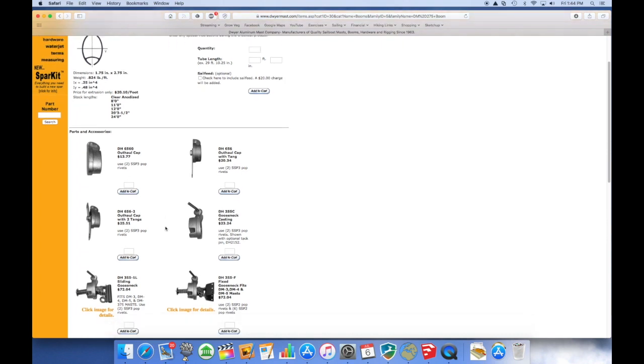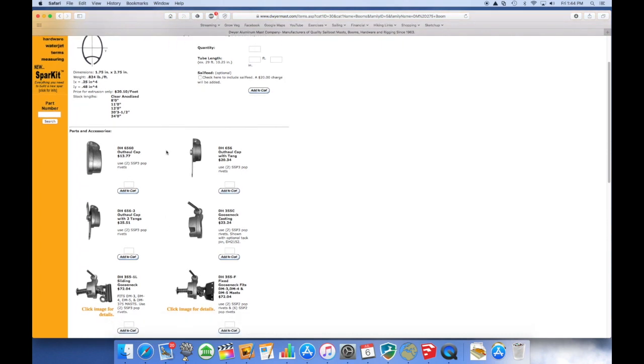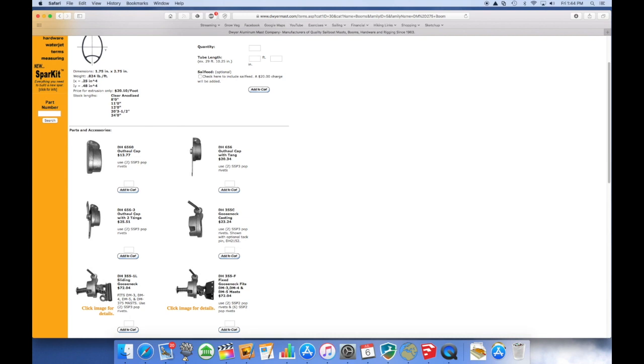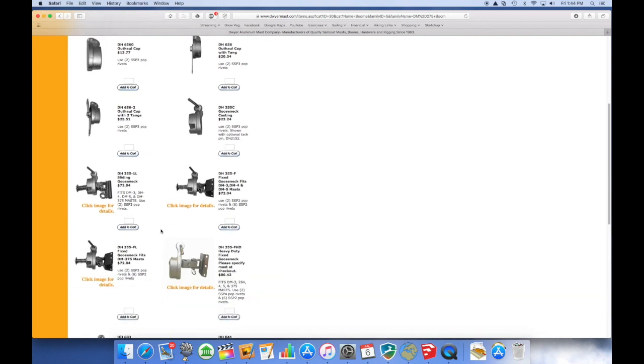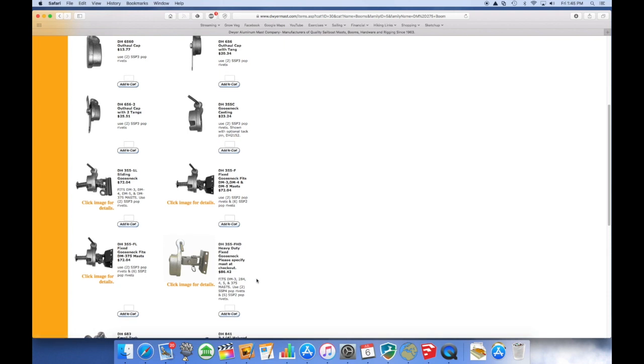And clicking on that we find not only information about the boom itself, but below that parts and accessories. At the top of the list we have some out-hauls for the boom, including one here with two tangs that probably is exactly what's on my Rhodes 22.